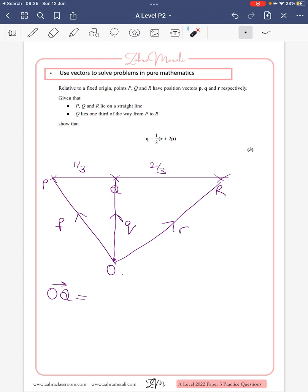If the direct path is closed, we can go up here and across. So we can go from O to P, plus P to Q.